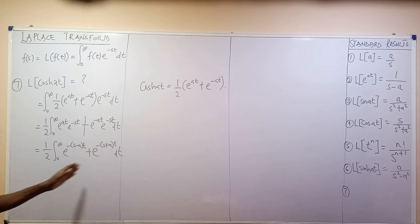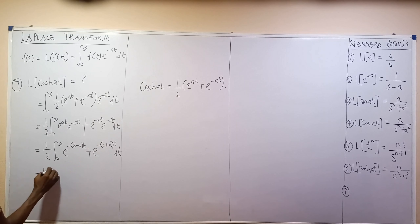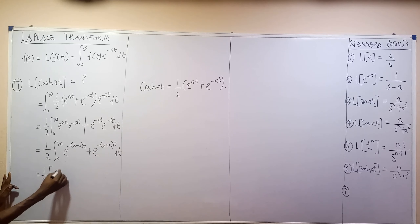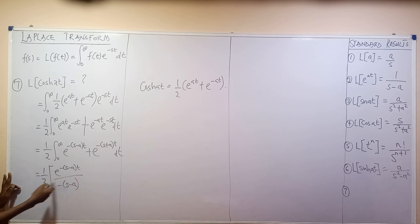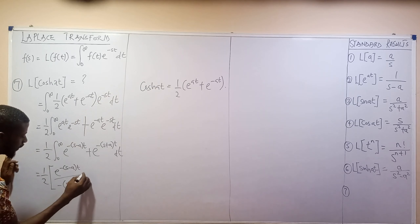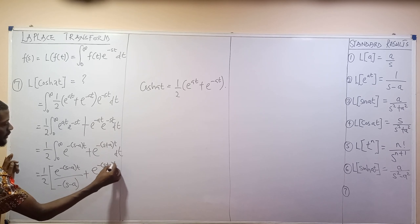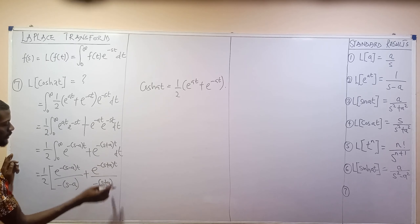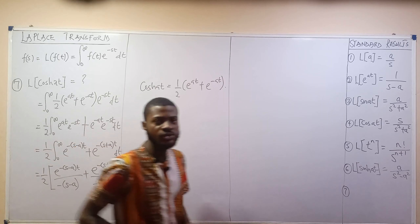Now I evaluate this integral. This becomes 1/2 times the bracket: exponential(−(s−a)t) divided by −(s−a), plus exponential(−(s+a)t) divided by −(s+a). That's because differentiating the numerator with respect to t gives the denominator. Go and learn how to differentiate exponentials if needed. I then apply the limits from 0 to infinity.